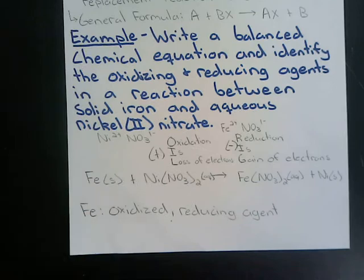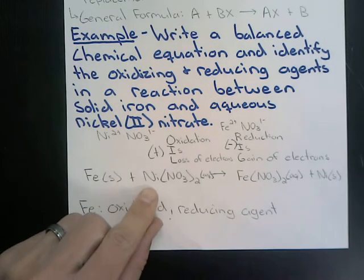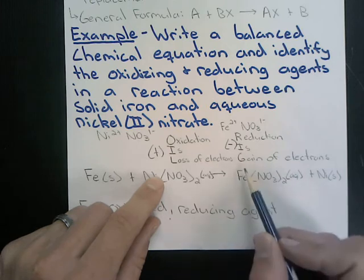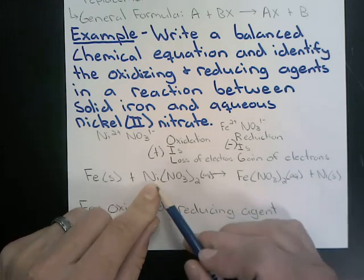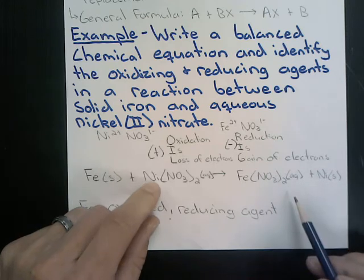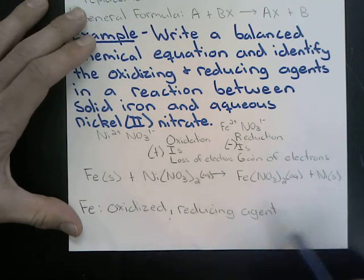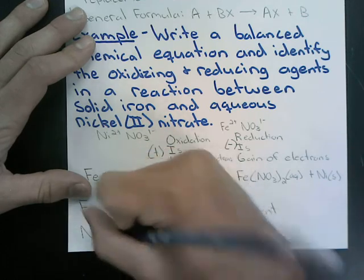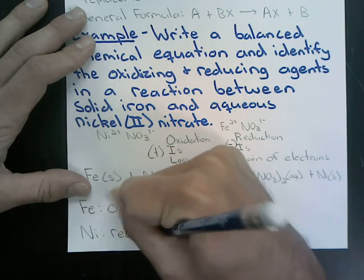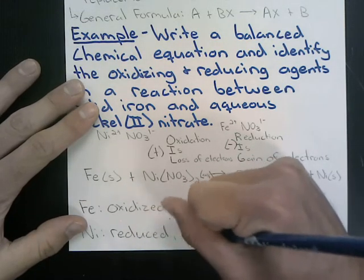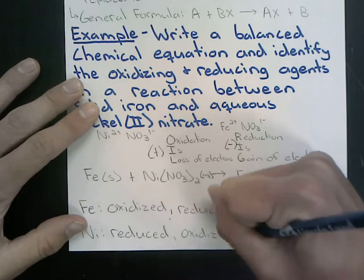Nickel is the only other species that changed its electron count. Nickel went from a +2 charge down to zero — it gained electrons and became more negative, so nickel is reduced. The thing that accepts electrons is reduced, and it's also the oxidizing agent. So nickel(II) nitrate is the oxidizing agent.